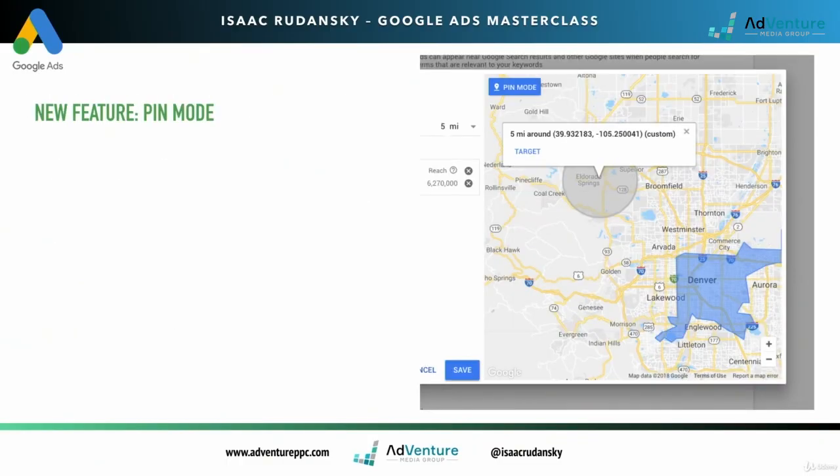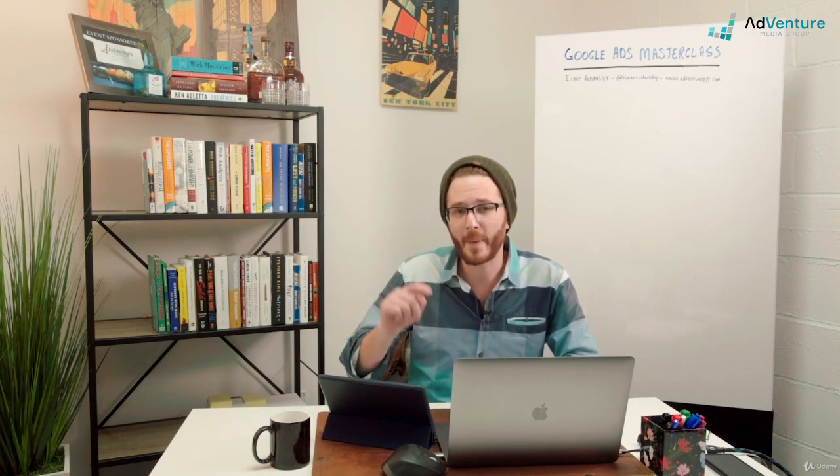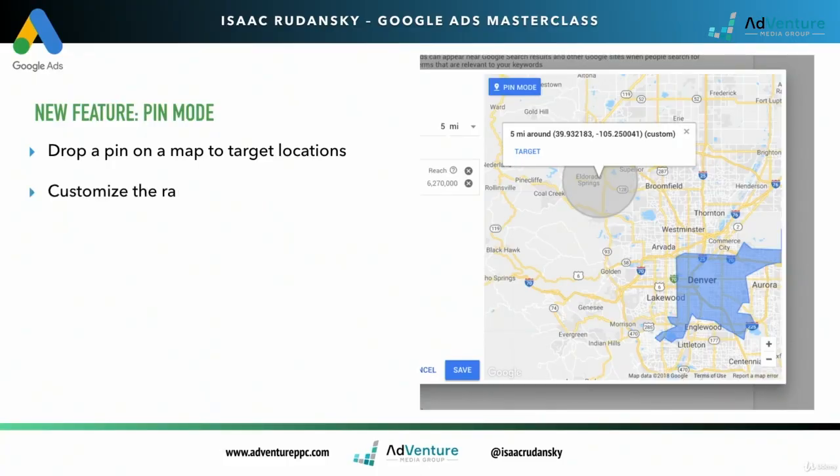There's a new feature in Google Ads that was not available in the old version of AdWords called Pin Mode, and I actually really like this. If you don't have an exact zip code or you don't have an exact address, you could use Pin Mode to just drop a pin anywhere on a world map and choose your radius targeting before you drop that pin, and Google will target that location. You can customize the radius of that pin by dropping it anywhere on the map and it'll be a radius of 1 to 500 miles.